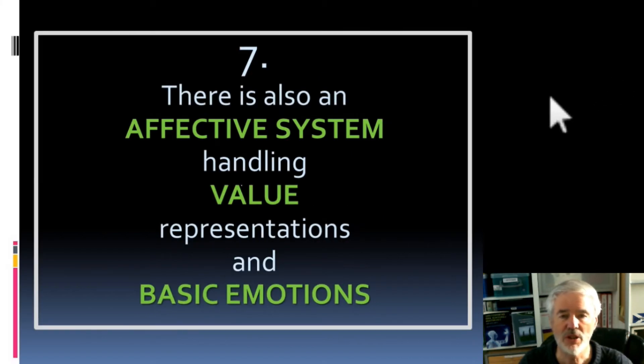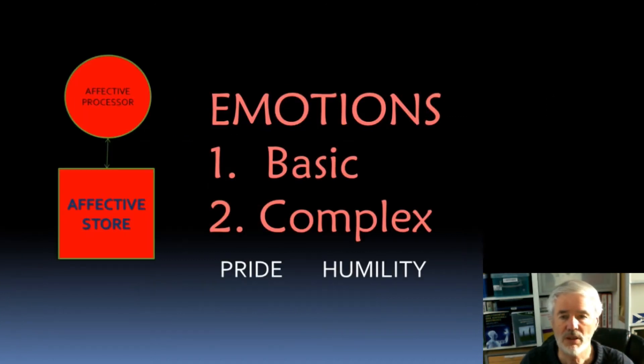Number seven, there's also an affective system, incredibly important and often underestimated, which handles the assignment of positive and negative values and also takes care of the basic emotions, which are a combination of representations which always include a positive or negative value.